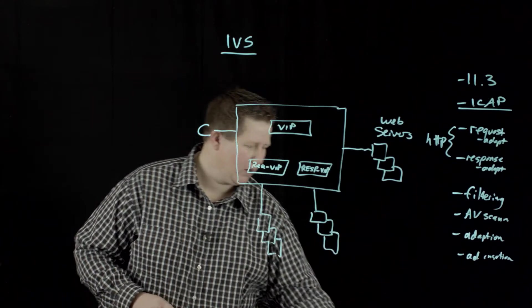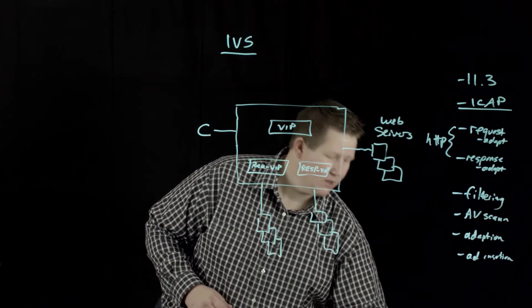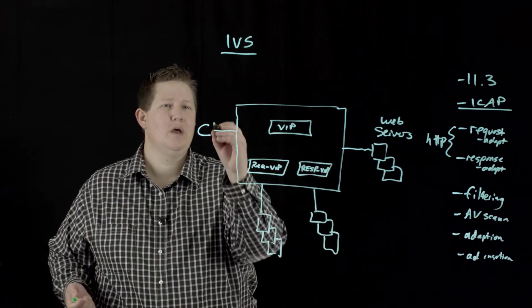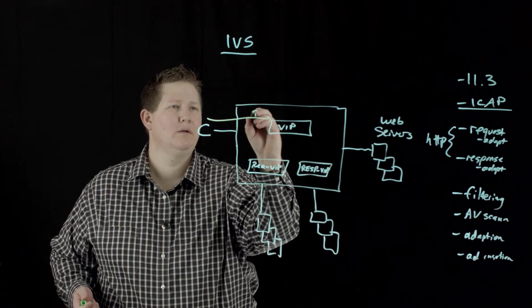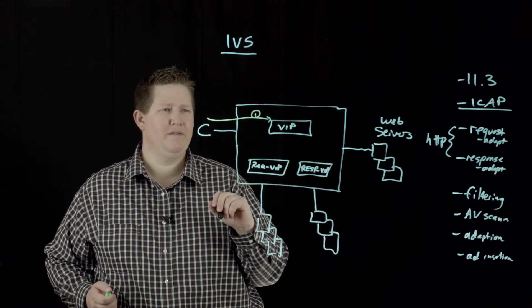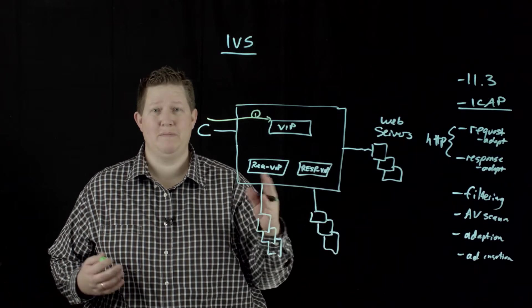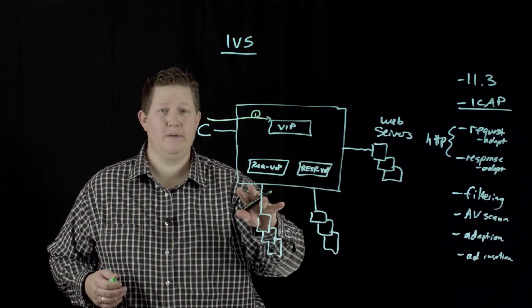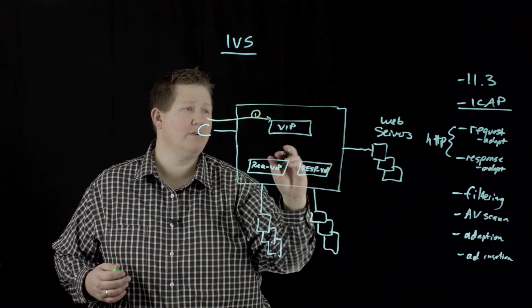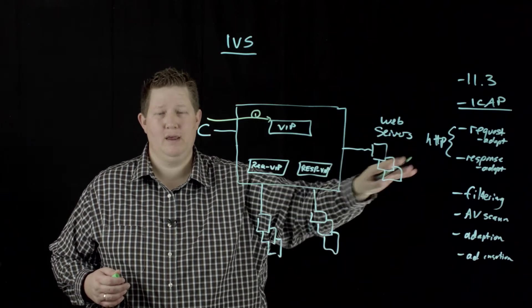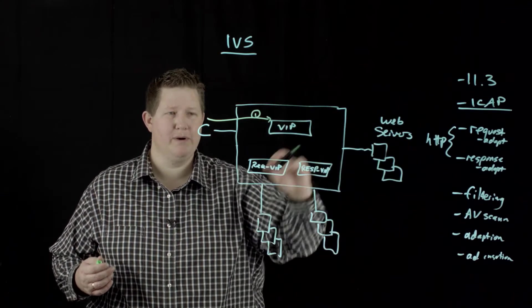To work on the flow, let's use our green marker here. Your request comes in to the primary VIP. If there's a reason to send it off, like it's matching a particular URL or something, it'll come here. If there's not a match, this VIP still has the web servers and can send it on. It'll work as normal with this primary VIP.